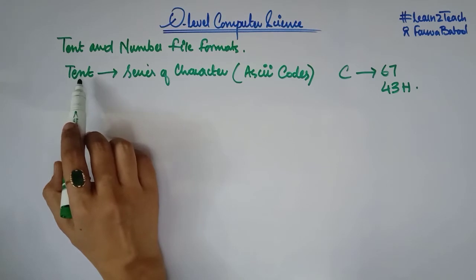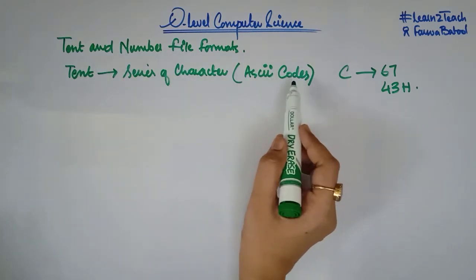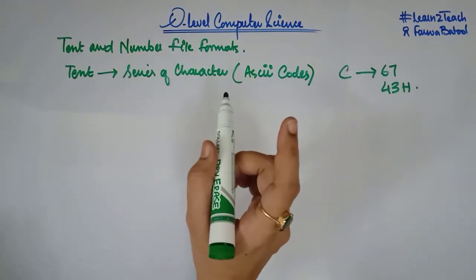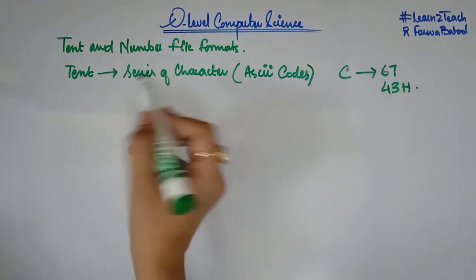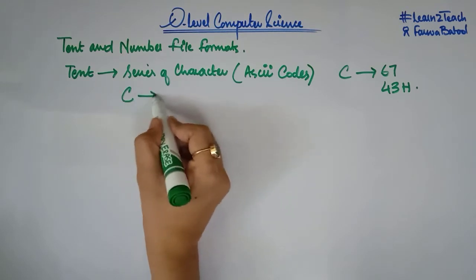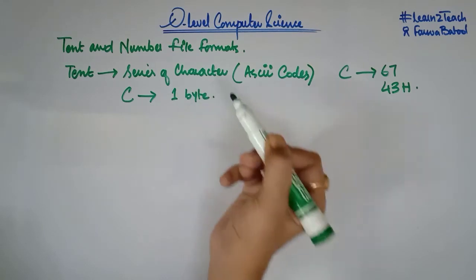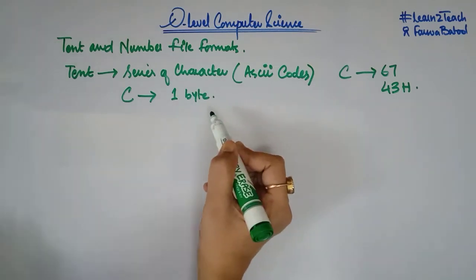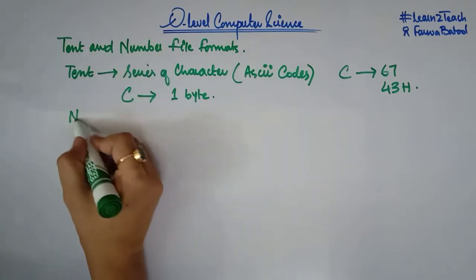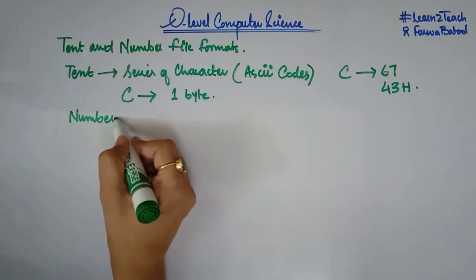Keep in mind that text is stored in the form of ASCII codes, and each character needs 8 bits of memory. For example, the character C is going to have one byte of memory in order to be stored. Now let's move towards numbers.